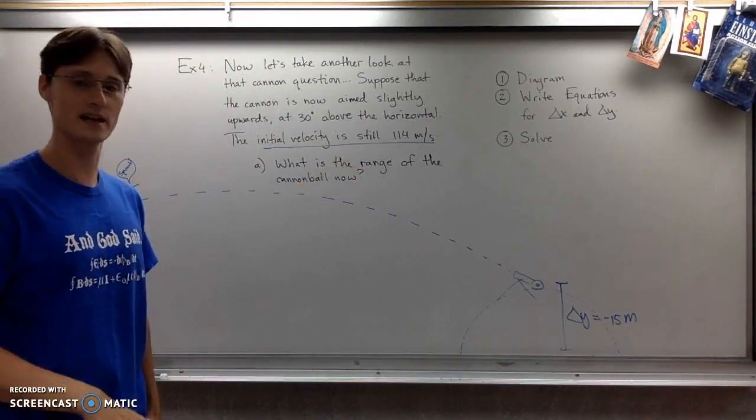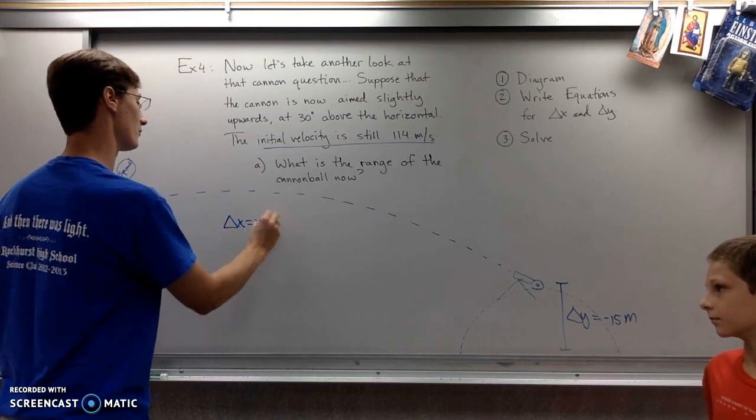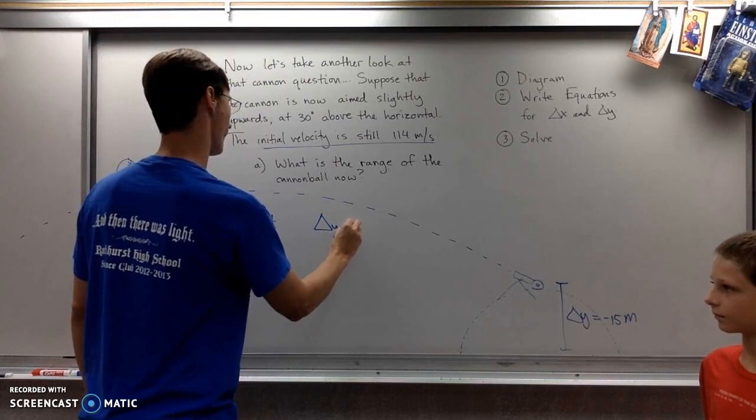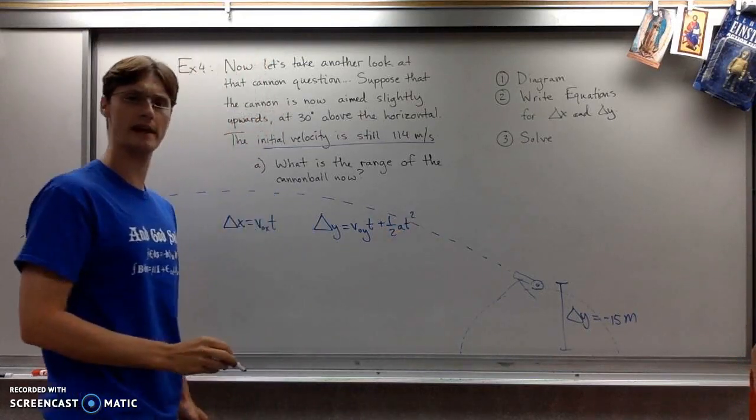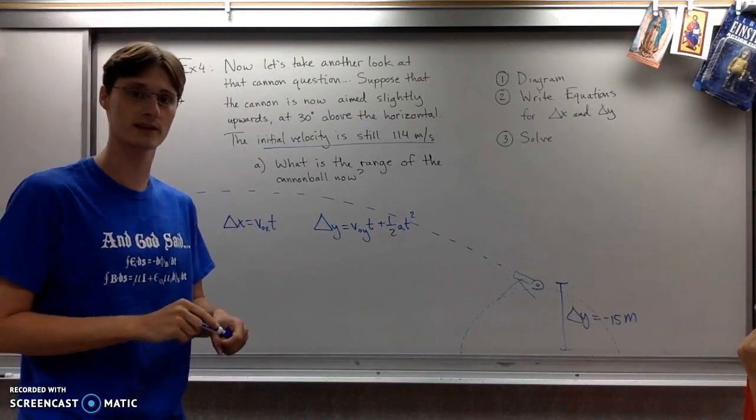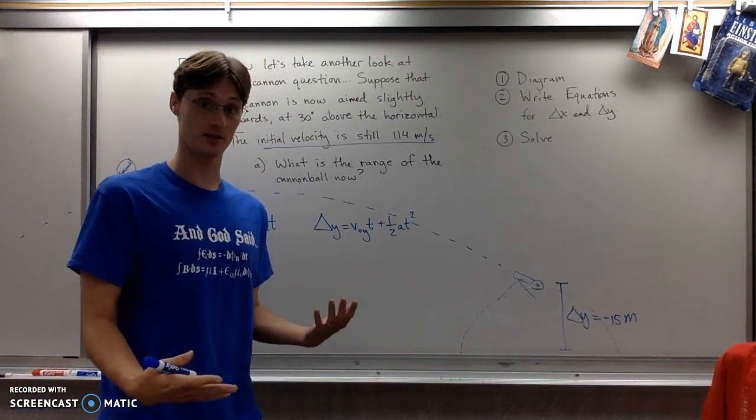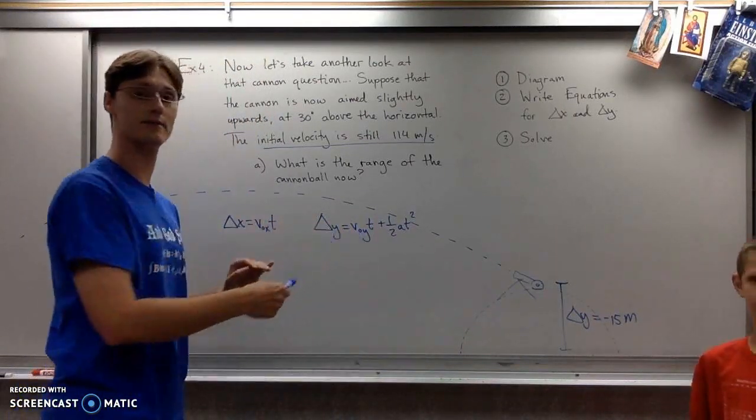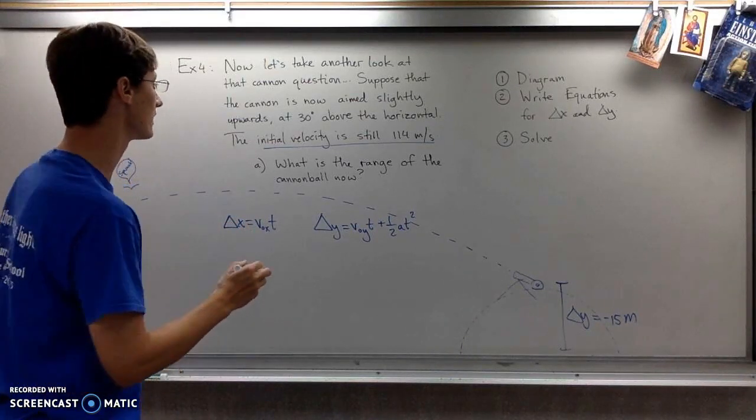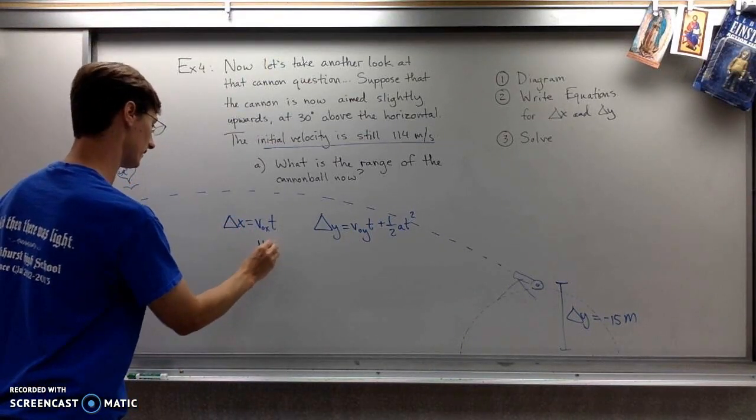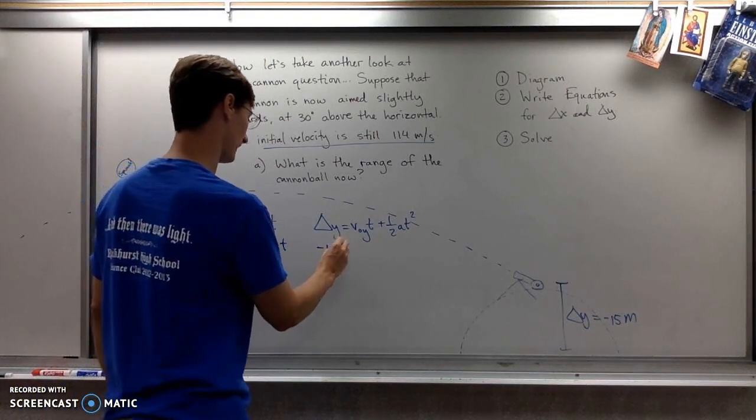A lot changes though. If you point the cannon upwards, the range is completely different, so I don't know delta x anymore. Let's write our equations and see what we can do. Feel free to pause if you want to work it out yourself. Since the cannon is firing at an angle, it has both x and y velocity. So I'll plug in 114 meters per second for each component.